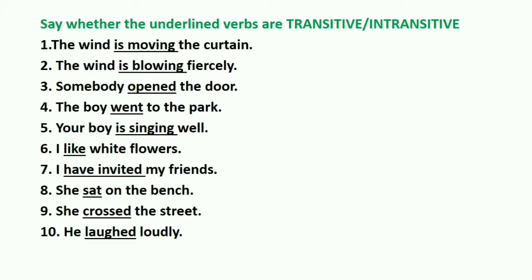First one: 'The wind is moving the curtain.' Remember, you have to ask 'what' or 'whom' after the verb — don't ask the question at the beginning. The verb is 'is moving.' The wind is moving what? It is moving the curtain. You are getting an answer to 'what,' so your answer is transitive verb.